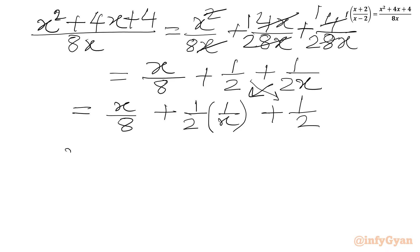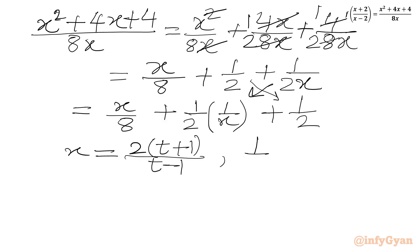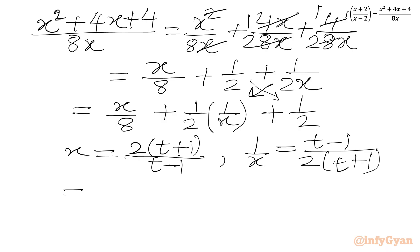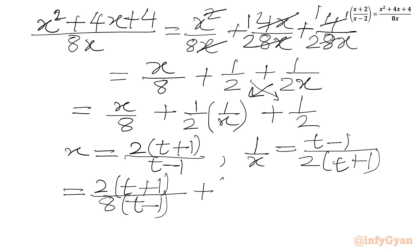Now we have x and 1/x ready in terms of t. So x = 2(t+1)/(t−1) and 1/x = (t−1)/(2(t+1)). Substituting: x/8 = 2(t+1)/(8(t−1)) = (t+1)/(4(t−1)), and (1/2)·(1/x) = (t−1)/(4(t+1)).